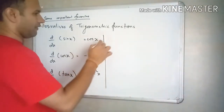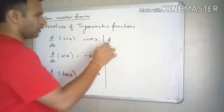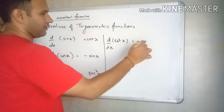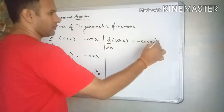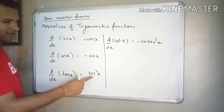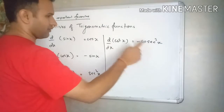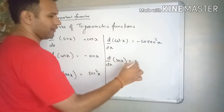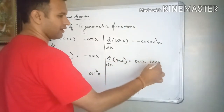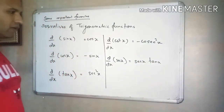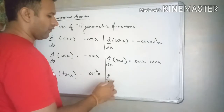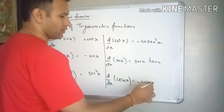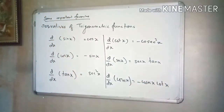Apart from this, derivative of cot x is minus cosec square x. Where it is tan it is sec square x. And derivative of sec x is sec x tan x — it's a product: sec x into tan x. And derivative of cosec x is minus cosec x cot x. You have to memorize these.